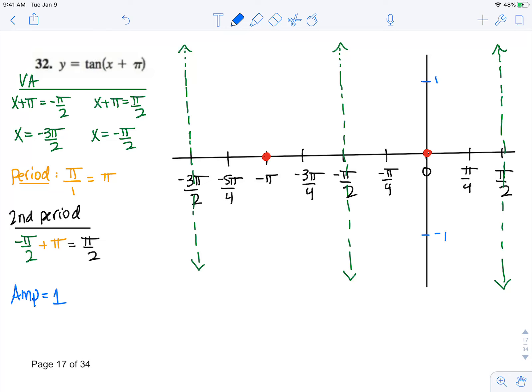So that means for this period, we're going to start up, which is going to be at π/4, 1. And we're going to end down over here, negative π/4, negative 1. Up here, negative 3π/4, 1. Down over here, negative 5π/4, negative 1.